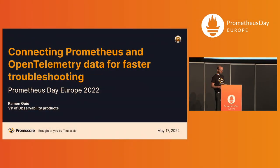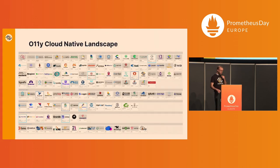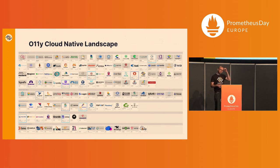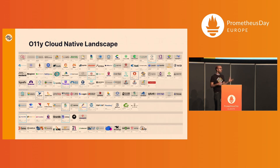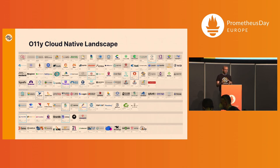I've been working in building observability products for the last few years, and this is a challenge I've always encountered as I talk to users of those products — they don't typically use just one tool. They use a lot of tools, and if you just look at the observability cloud-native landscape, there are a ton of them. You probably are using more than one, and quite often the challenge is that you're collecting data and getting that data into different systems, and you have to correlate it somehow.